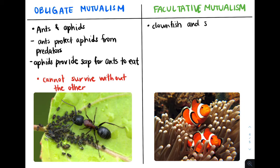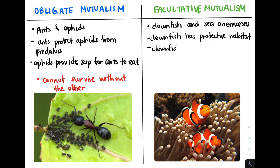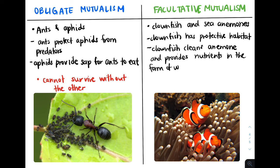Now let's take a look at the example of facultative mutualism between clownfish and sea anemones. The clownfish have a safe and protective home in the sea anemone. One fun fact is that sea anemones have nematocysts, which are stingers, and these tentacles are normally used to capture prey. But the clownfish have developed an adaptation to not be stung by the nematocysts. The anemones are also benefited because the clownfish clean the anemone and provide nutrients in the form of different wastes. In this kind of mutualism, one or both species can survive without the other — they are benefited by the interaction but are less dependent on it.